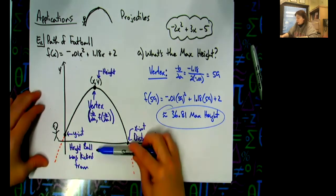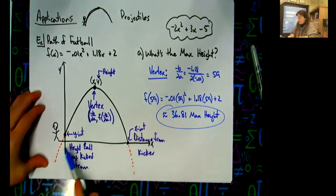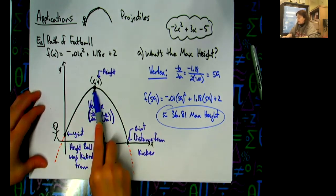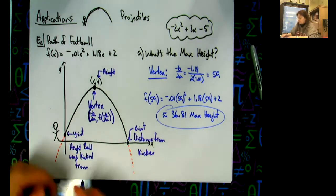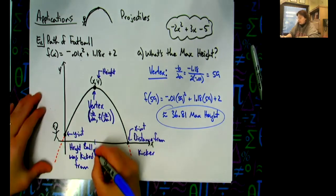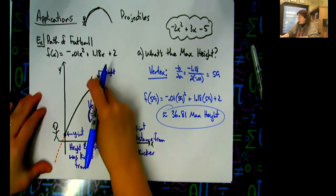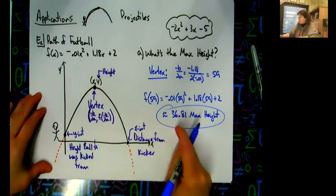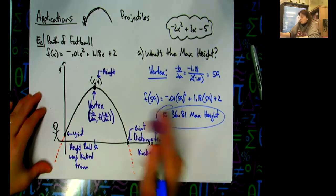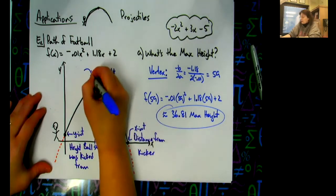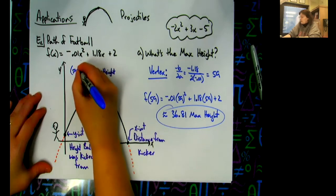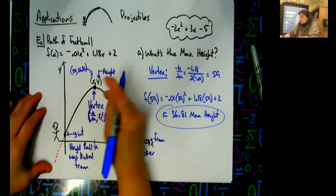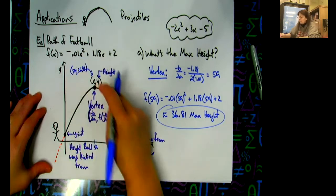So the vertex is at (59, 36.81). On the diagram, that's x = 59 and height = 36.81 — that's the vertex right there.